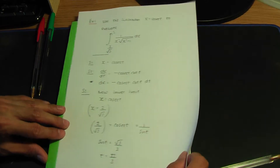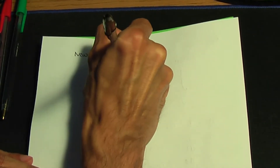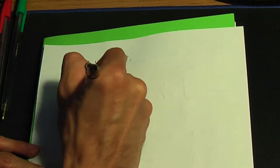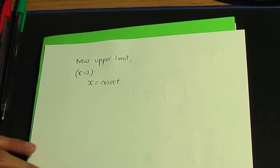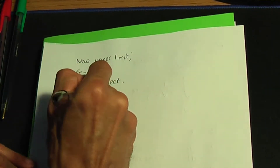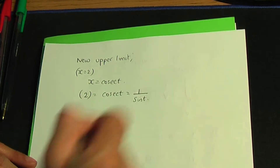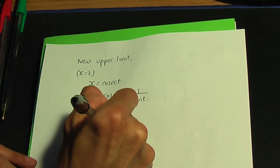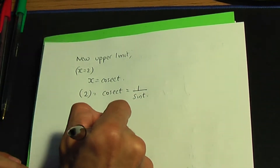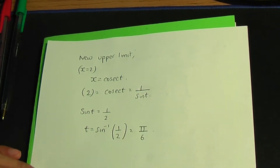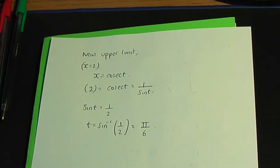For the new upper limit, the old upper limit is x = 2. Taking the substitution x = cosec t and replacing x by 2: 2 = cosec t. Since cosec is 1/sin, rearranging gives sin t = 1/2, so t = arcsin(1/2) = π/6, which is 30 degrees. That is our new upper limit.